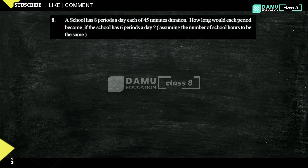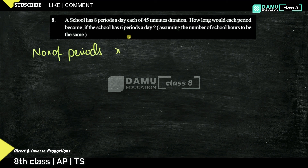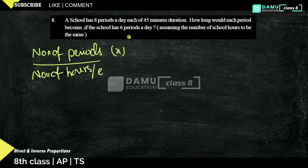Hello viewers, thanks for watching our videos. In this module, we are going to discuss the next question: a school has 8 periods a day, each of 45 minutes duration. How long would each period become if the school has only 6 periods a day, assuming the number of school hours to be the same? Let's take the number of periods as X and the time for each period as Y.